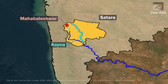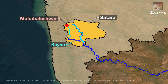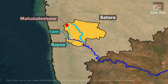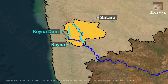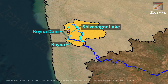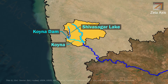The Koina River also originates near Mahabaleswar in Satara district. Unlike most other rivers in Maharashtra which flow from east to west, the Koina River flows in a north-south direction. Koina Dam is built on the Koina River within Satara district, and the reservoir created by it is called Shivsagar Lake. The Koina River meets the Krishna River within Satara district.